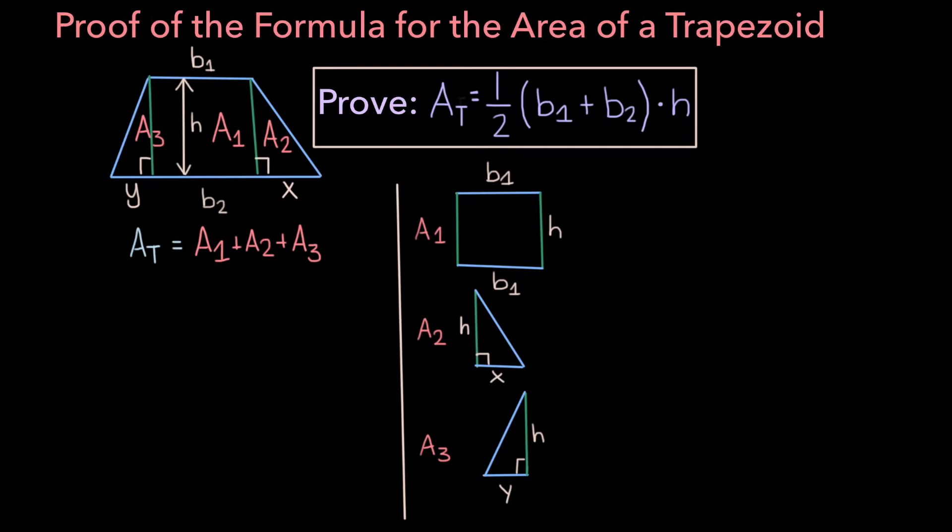I've drawn out our three different shapes. Now let's get to determining what A1, A2, and A3 actually are. A1 is the area of a rectangle, so it'll be equal to base times height, or in this case, b1 times h.